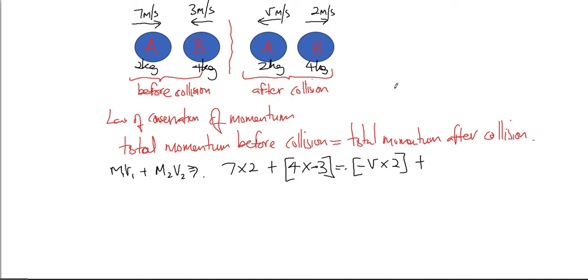And then plus 2, which initially was negative 3 but now it's positive 2. Remember this is moving towards right, so it's positive 2 times by 4.